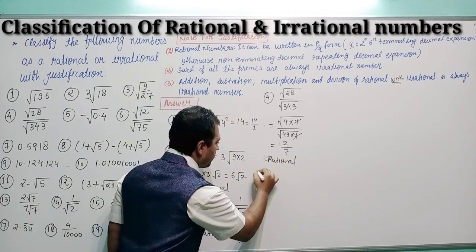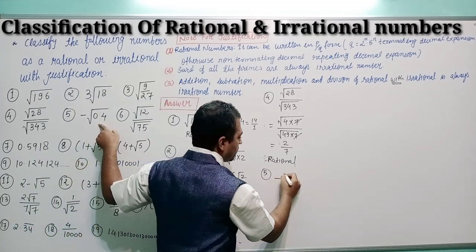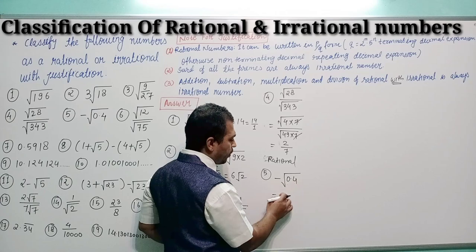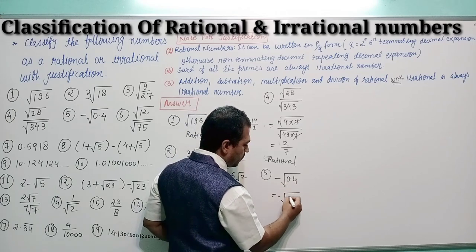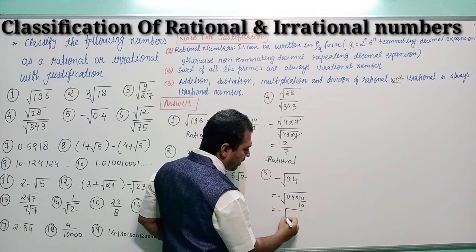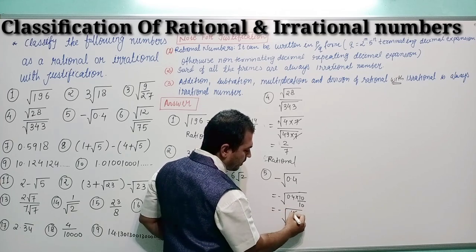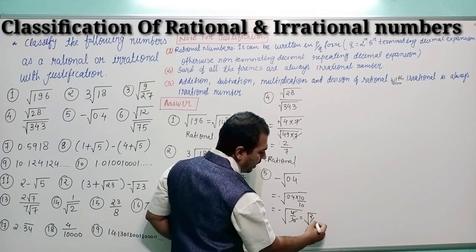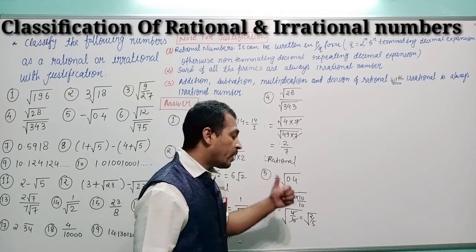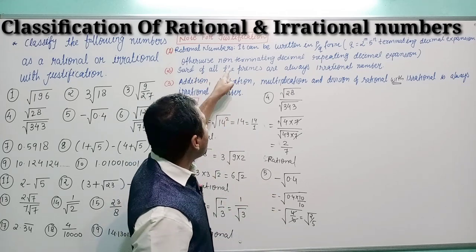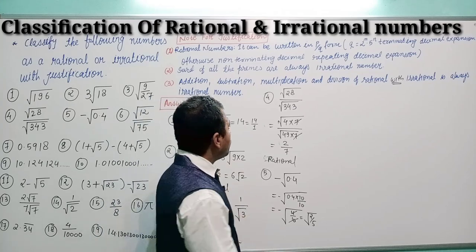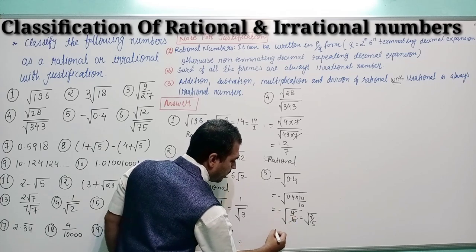Question number 5: −√0.4. Simplifying, 0.4 = 4/10 = 2/5. Now 2 is a prime number and 5 is also a prime number. As stated, the square root of all prime numbers is always irrational. Therefore question number 5 is irrational.